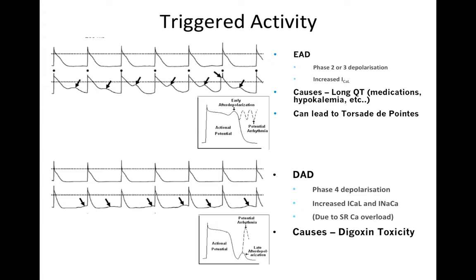Triggered activity is an abnormal process where there is an early after-depolarization. Under usual circumstances, the action potential has to get back to phase 4 before another depolarization is triggered. Triggered activity is responsible for polymorphic ventricular tachycardia, and can be either early delayed after-depolarization — which can lead to torsade — or delayed after-depolarization, which could be caused by digoxin toxicity. Digoxin is an antiarrhythmic or rate-controlling agent used in atrial fibrillation and heart failure, and increased levels can lead to triggered activity-related arrhythmias.